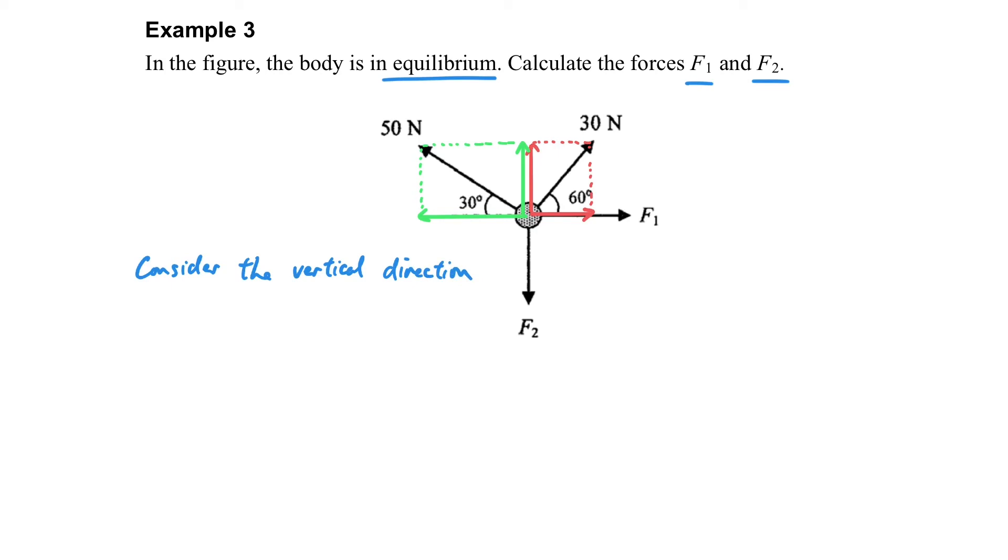So firstly, let's consider the vertical direction. After resolving the force, we can observe that F2 is equal to the vertical components of the 30 Newton and the 50 Newton forces. So by using this method, we can find the vertical F2, and then consider the horizontal direction.